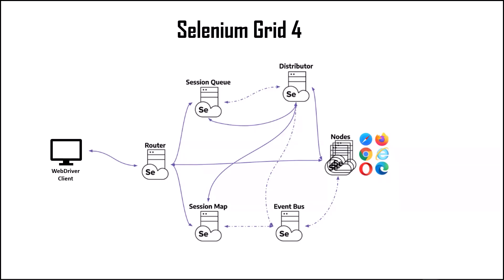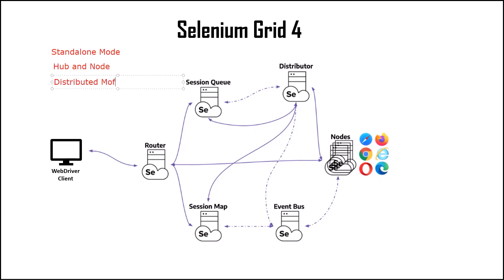In my last videos we have already discussed the other modes to set up Selenium Grid. In total we have three modes of Selenium Grid: the first one is standalone mode, the second one is hub and node, and the third one is distributed mode. I have already created videos on standalone mode and hub and node. Today I'm going to discuss the third mode, which is distributed mode.